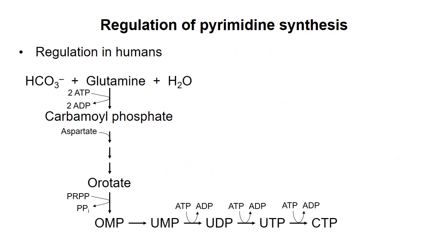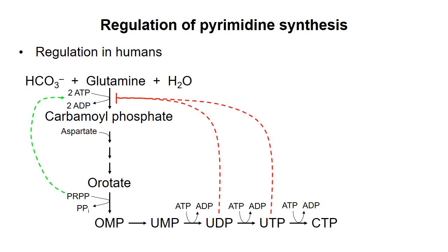Again, regulation of this pathway should make sense to you. Two of the late nucleotide intermediates allosterically inhibit the reaction that produces carbamoyl phosphate. PRPP activates this reaction, as does ATP. Thus, when the cell has a lot of energy, pyrimidine synthesis is favored.